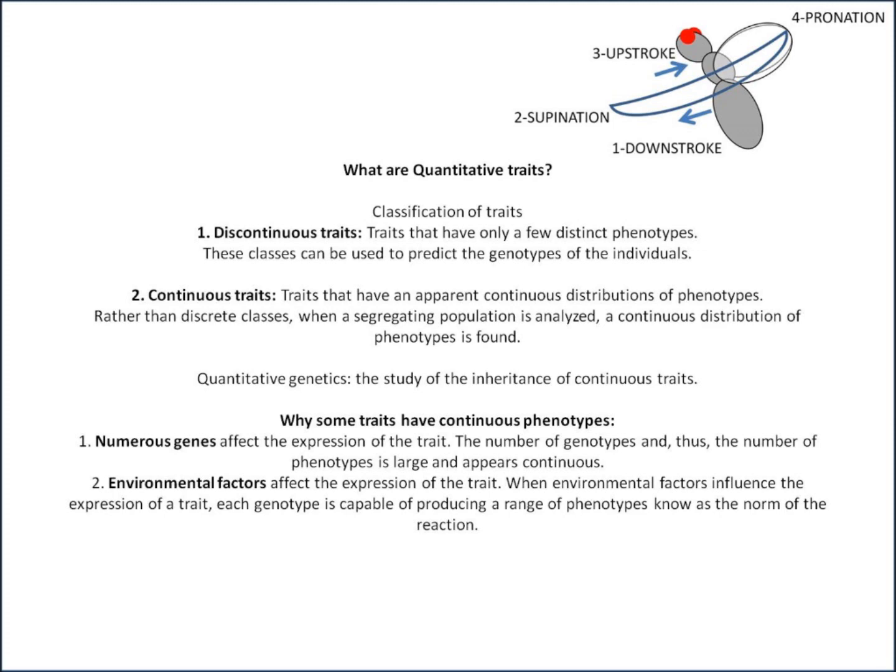There are two main reasons, which are not mutually exclusive. The first reason is that you might have numerous genes affecting the expression of a trait, so the number of genotypes and thus the number of phenotypes is large and appears continuous. The second reason is the environment — if environmental factors affect the expression of a trait, then each genotype is capable of producing a range of phenotypes, which is known as the normal reaction.